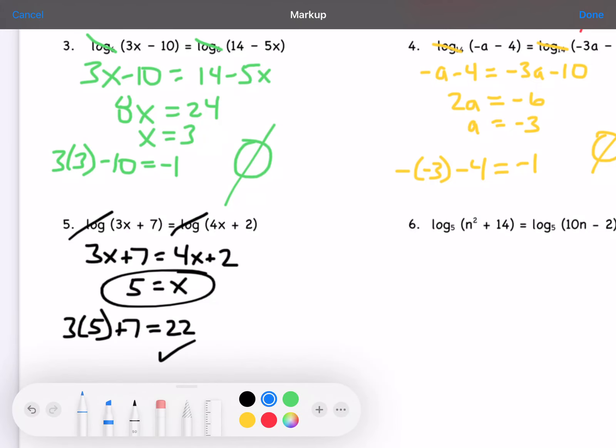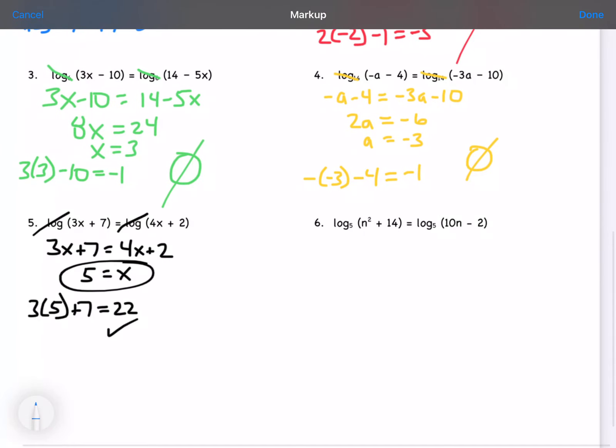And then my last one, log base 5 of n squared plus 14 equals log base 5 of 10n minus 2.